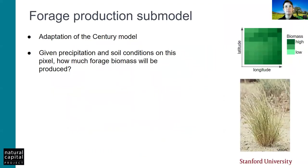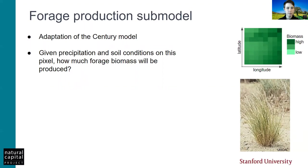First, the forage production submodel. This piece of the rangeland production model is an adaptation of the Century model, which is a very well established model originally developed for grasslands. Century takes climate and soil drivers and predicts production of new above and below ground biomass. It also predicts senescence of live biomass and decomposition rates, mostly driven by precipitation, soil nutrient availability, temperature, and parameters that describe the plant response to all of these. From this submodel, we get standing biomass and forage nutrient content — standing biomass is the metric used for rangeland condition.